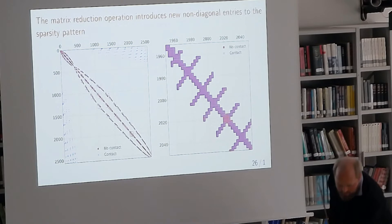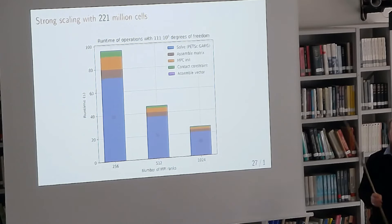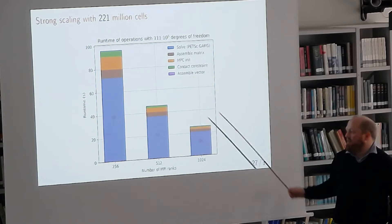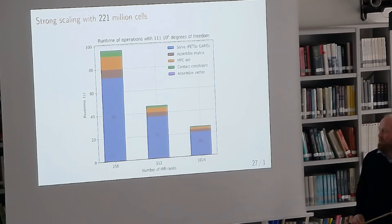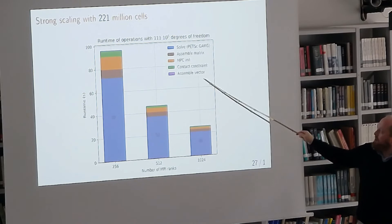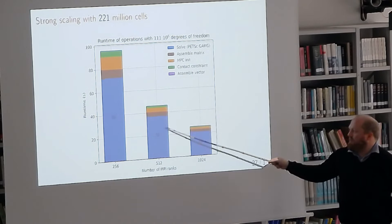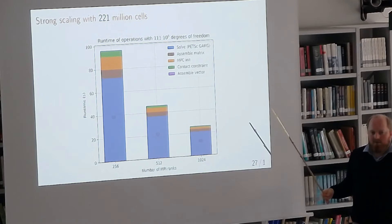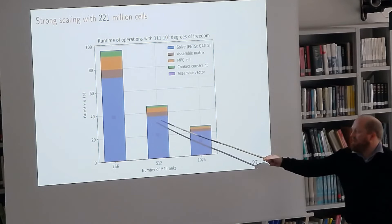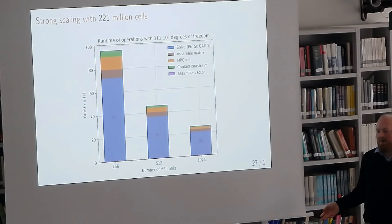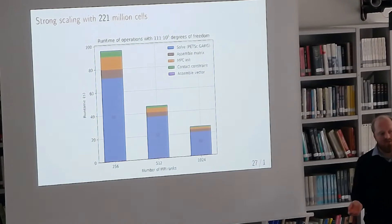We investigated how this affects the sparsity pattern. The red entries are the standard linear elasticity sparsity pattern with no contact, and the blue crosses are the contact contributions — many non-local contributions are added to the matrix system. For constrained dofs, the entire row and column is set to identity. Regarding scaling: we refined the contact problem to 221 million cells and tested from 256 to 1,024 MPI ranks. The solve time using PETSc GAMG does reduce with more processes — not quite optimal scaling but quite good. There is a slight increase in iteration count that accounts for some increase in runtime, but it doesn't explode with increasing process count.